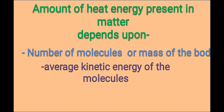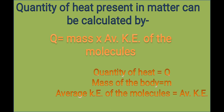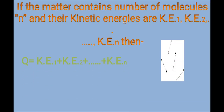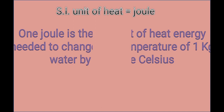The amount of heat energy present in matter depends upon the number of molecules or mass, and the average kinetic energy of the molecules. The quantity of heat present in matter can be calculated by Q equal to mass into average kinetic energy of the molecules. If the matter contains N molecules with kinetic energies KE1, KE2, and so on, then Q equals the sum of kinetic energy of all molecules. It can be measured by a calorimeter.